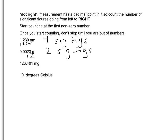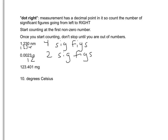In 123.401, we have a decimal point. We start on the left and work to the right — the first number is a non-zero number. This measurement has six significant figures. And finally, we have 10 degrees Celsius — 10 with a decimal point. The reason the decimal point is there is so that that zero is significant. This measurement has two significant figures.